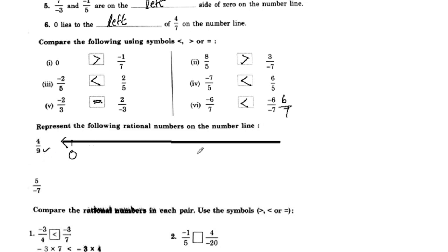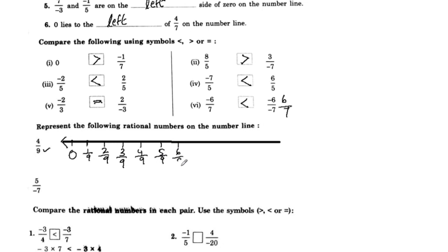If we divide the interval into 9 parts, we get: 1 by 9, 2 by 9, 3 by 9, 4 by 9, 5 by 9, 6 by 9, 7 by 9, 8 by 9.